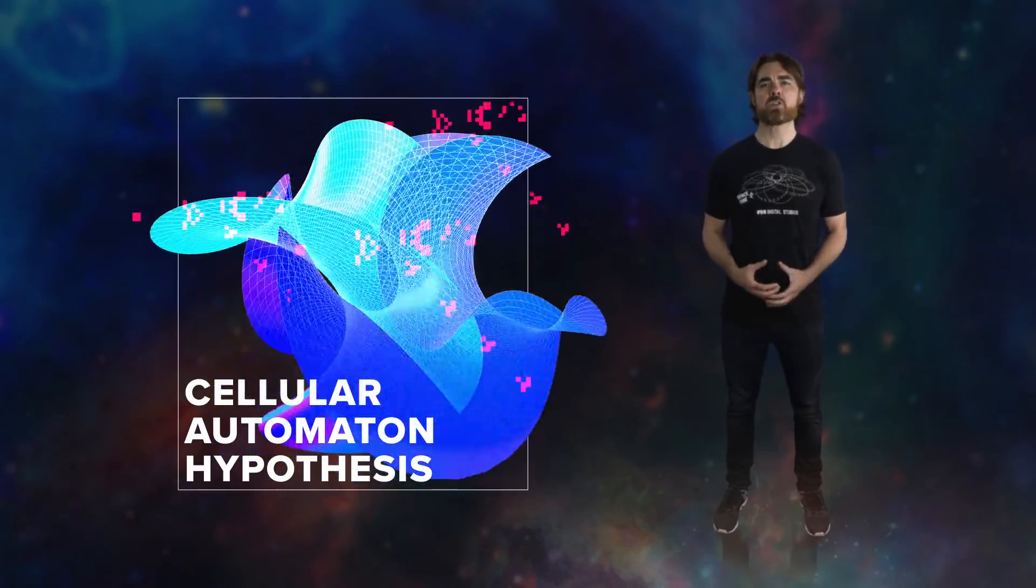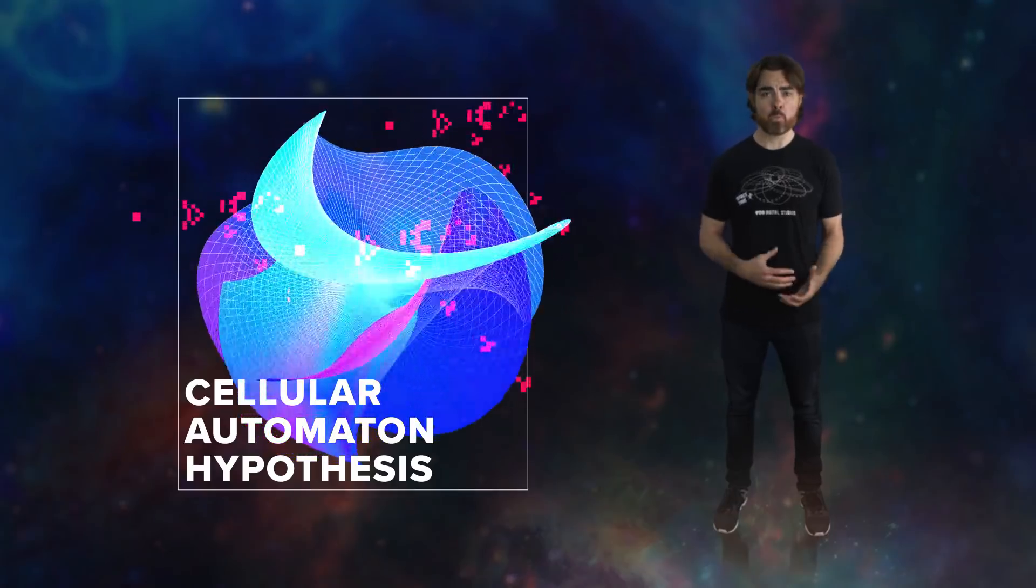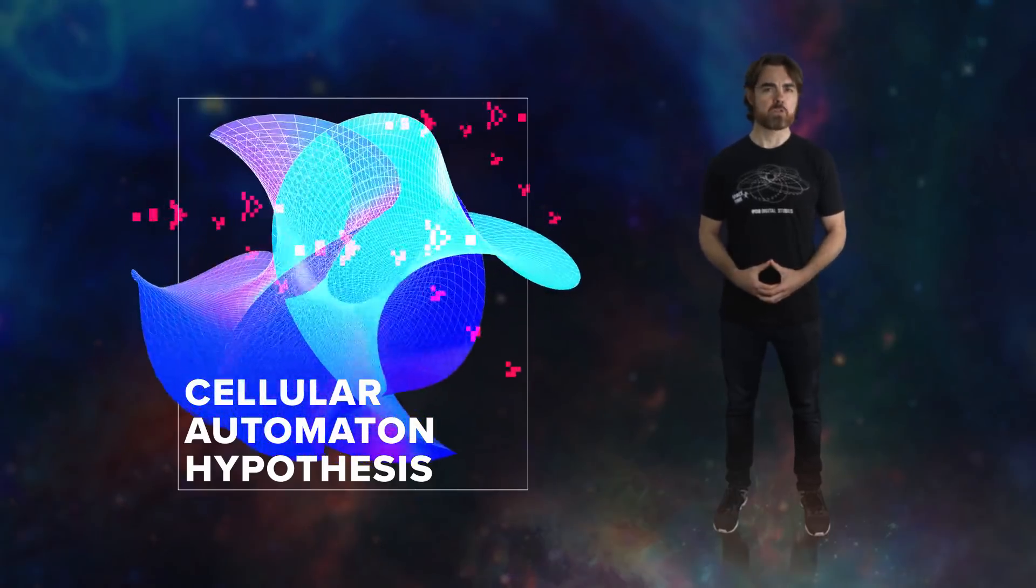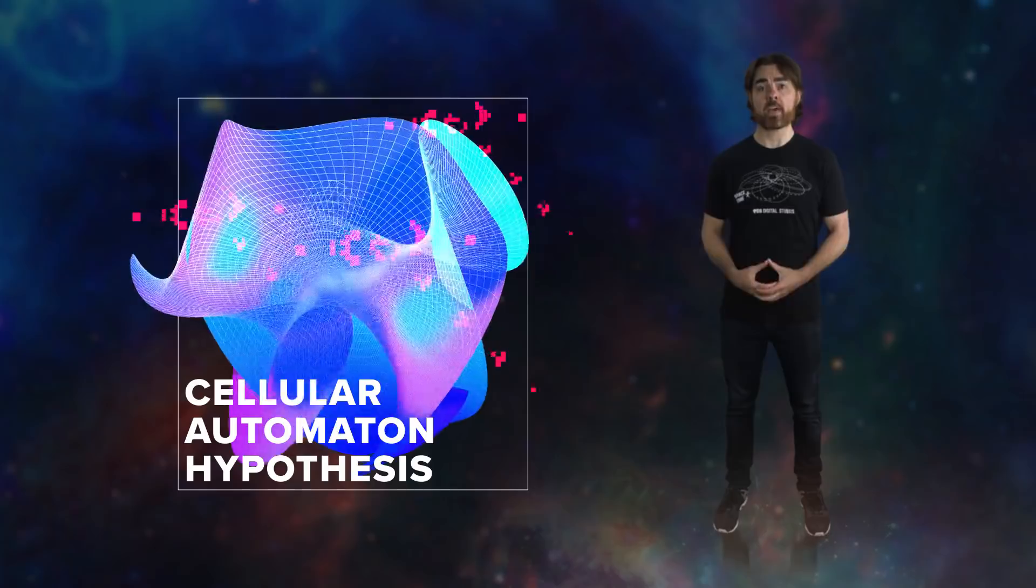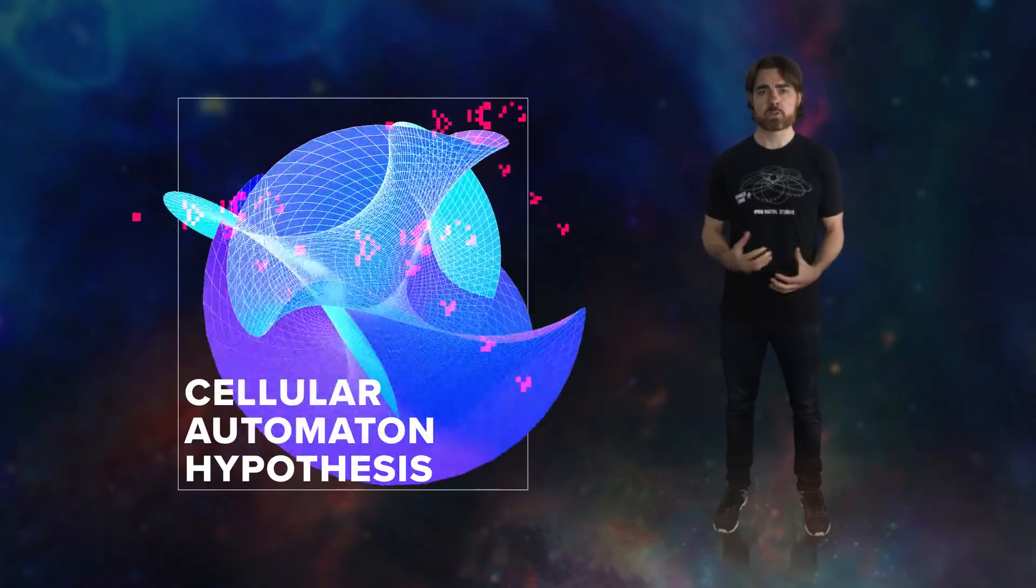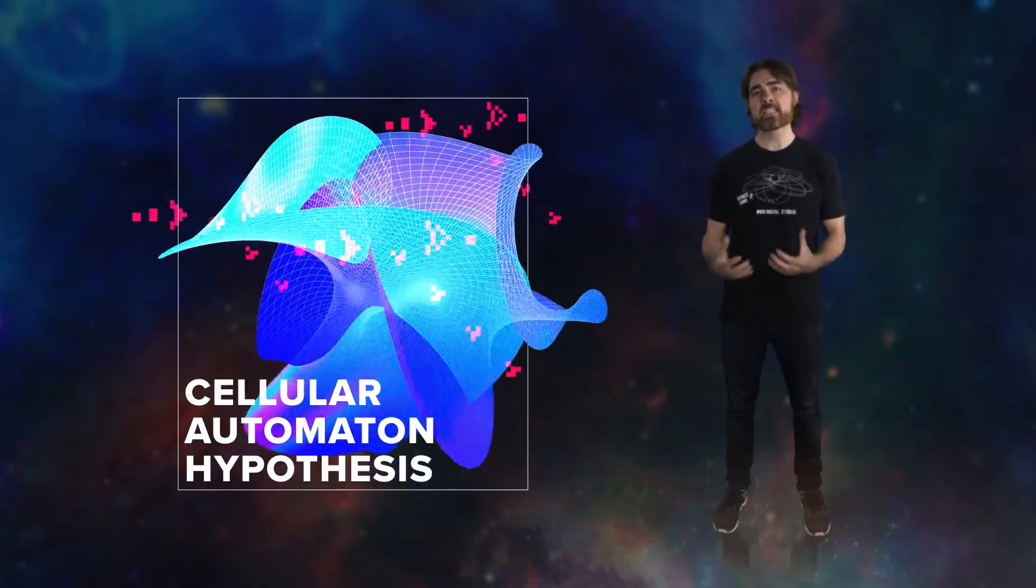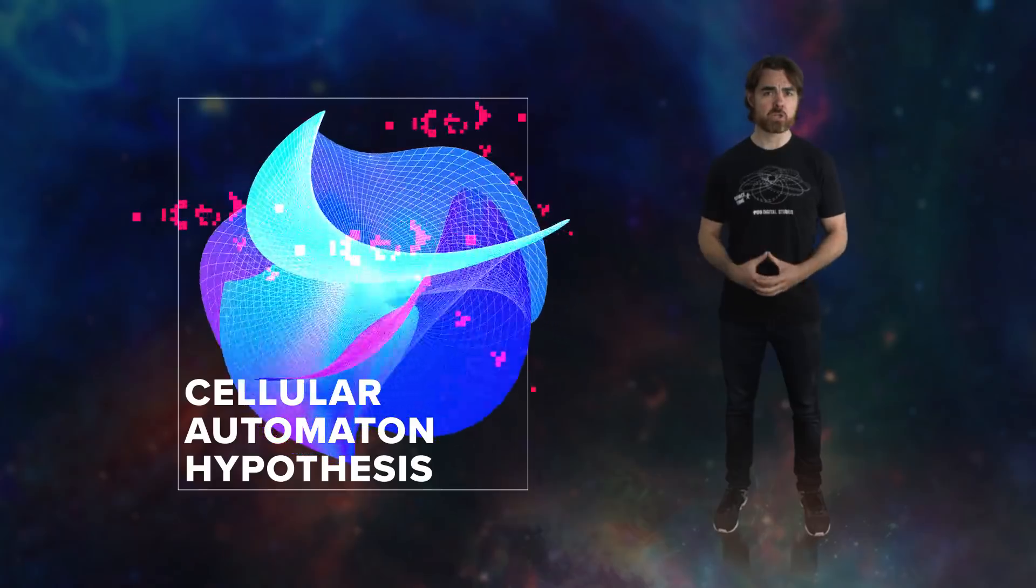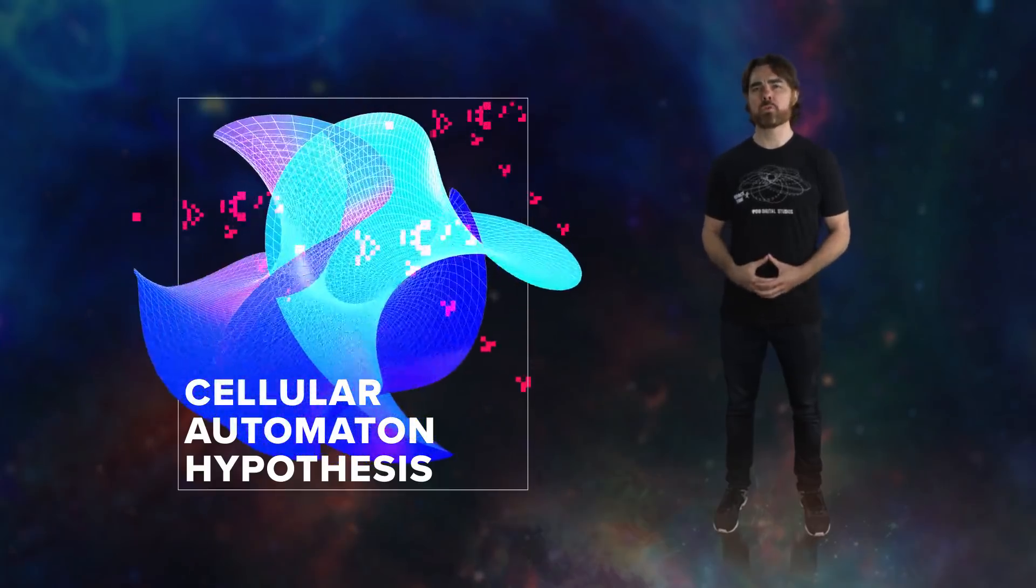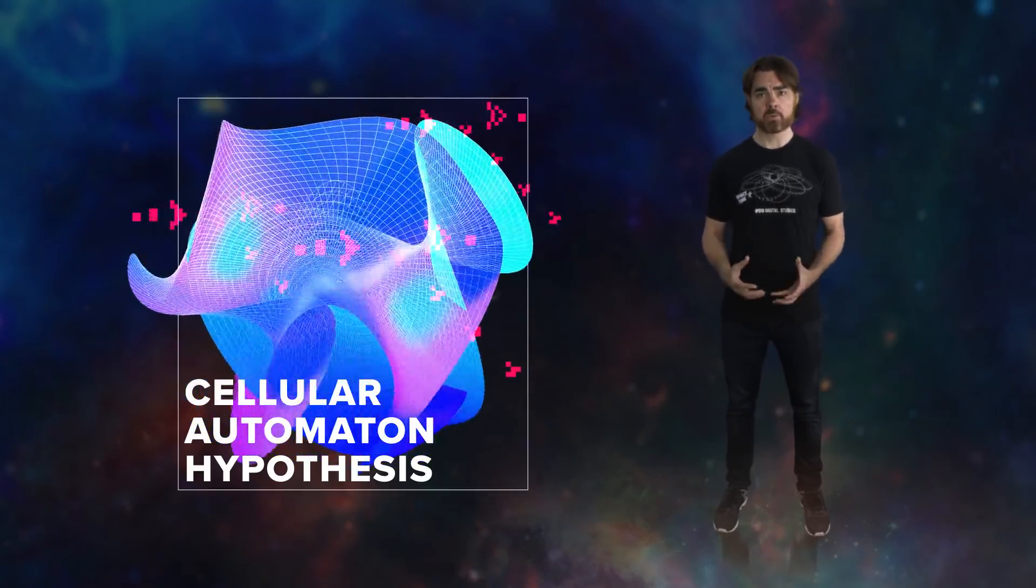I just described the cellular automaton hypothesis. In this picture, the universe is a multidimensional version of Conway's game of life. Such a universe could be reasonably thought of as a computation, cells stripped of all properties until they are indistinguishable from pure information. And together they form a sort of computer whose sole task is to compute its own evolution.